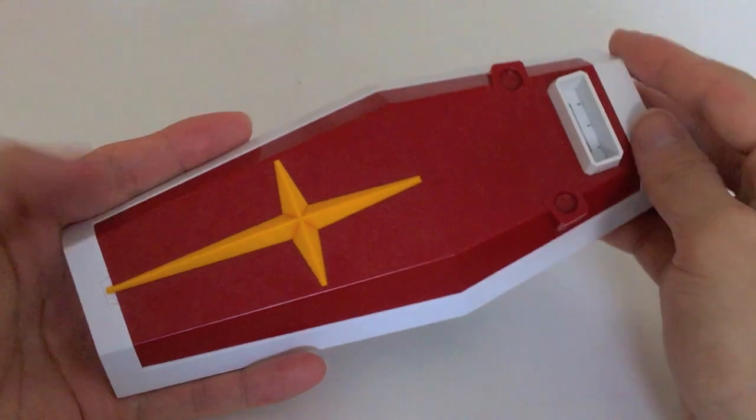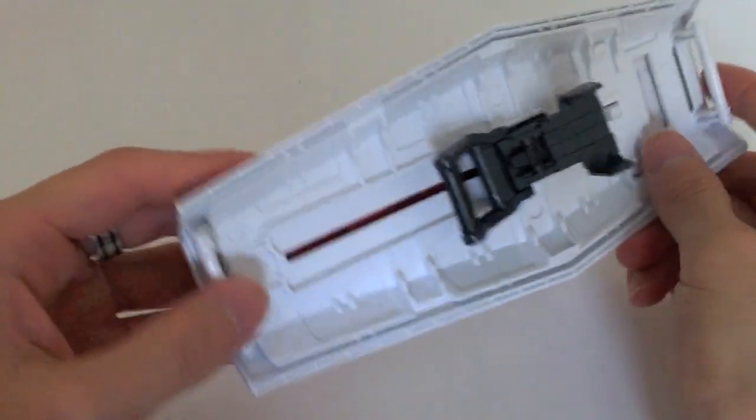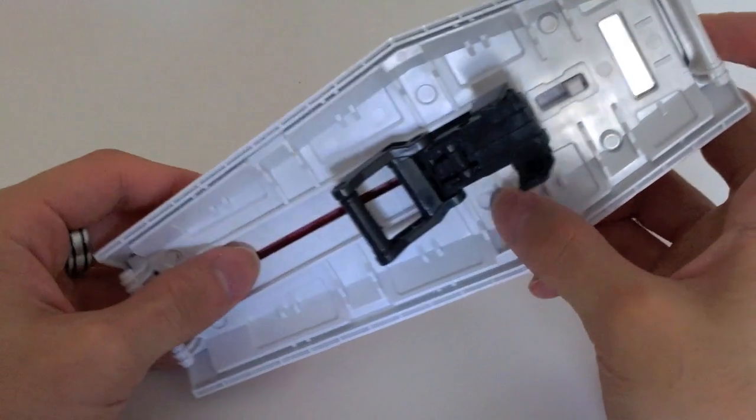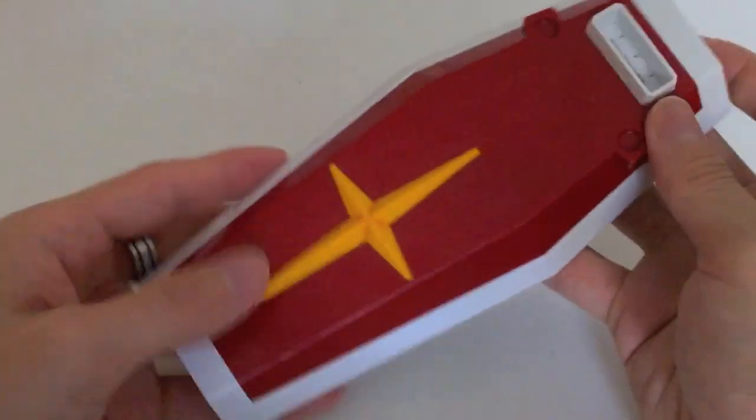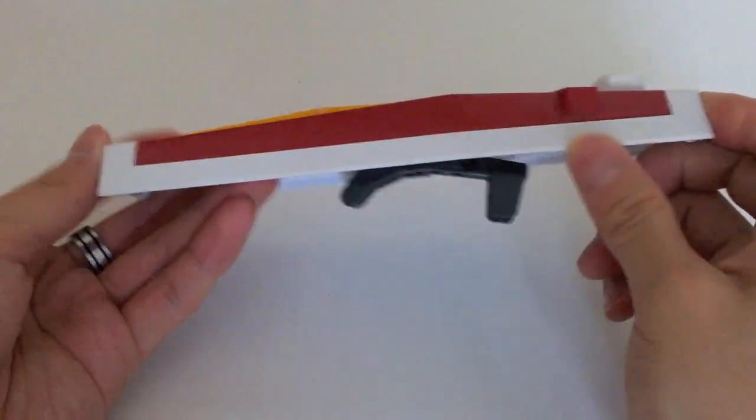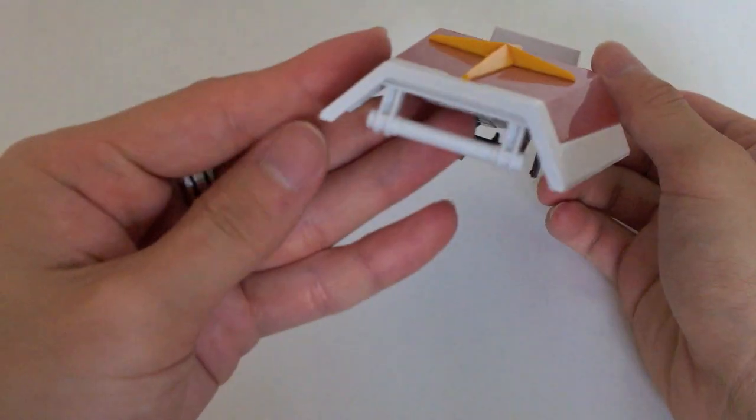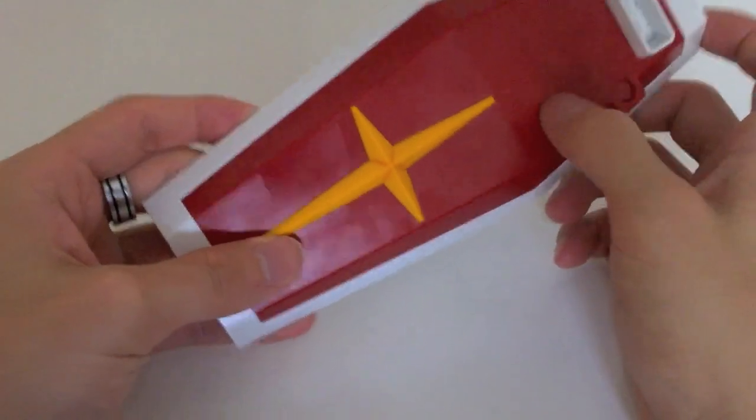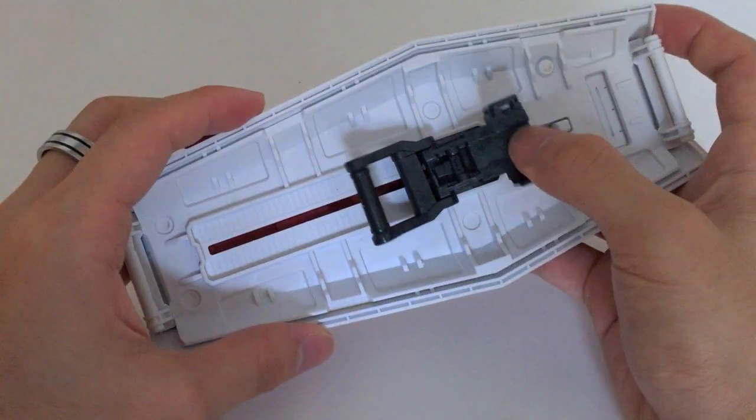And last but not least is the Gundam shield. Lots of nice detail on the inside and it looks pretty good. A bit thicker than I would have expected proportionally, but it definitely looks very solid. Most of it is hollow so it's not too heavy.